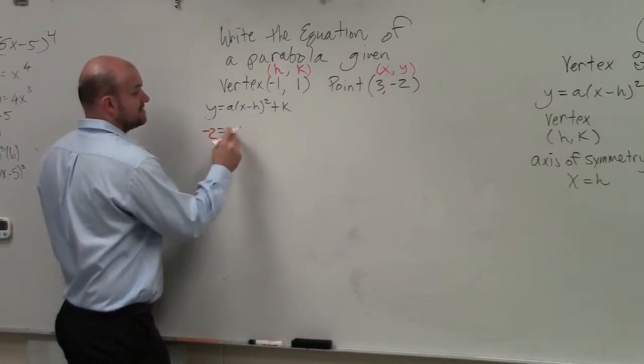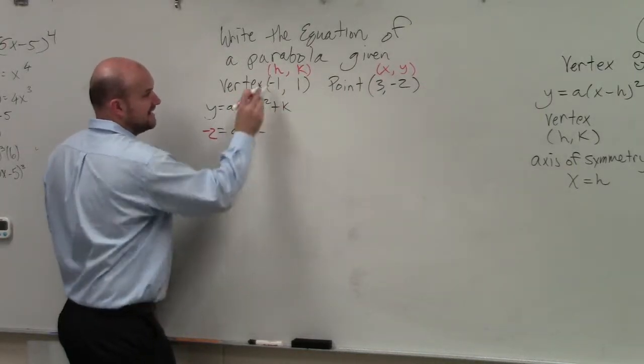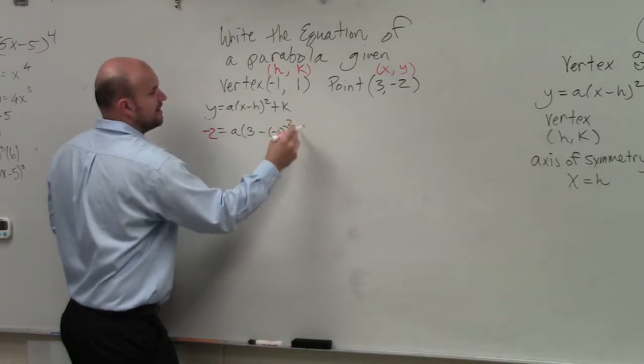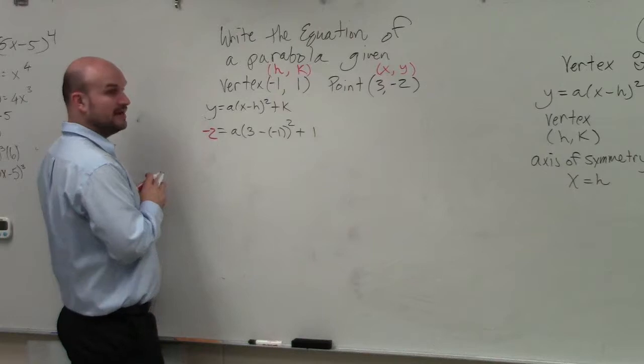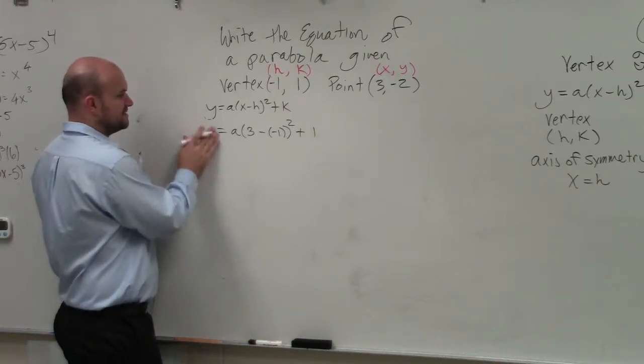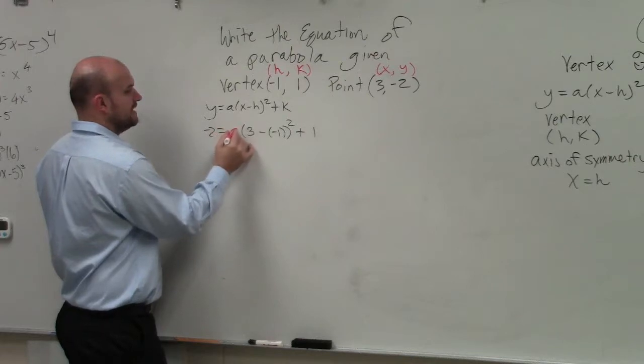We don't know what A is. X, we say, is 3, minus H, which is negative 1, squared, plus K, which is 1. Right? So basically, ladies and gentlemen, the only thing we don't know is A.